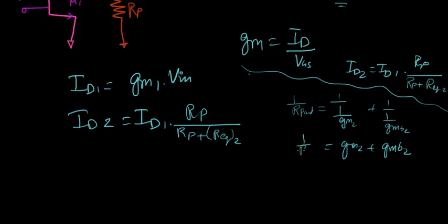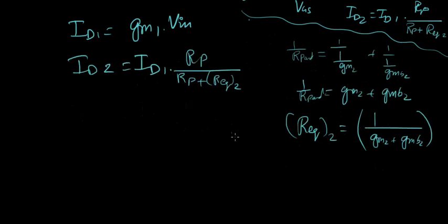So REQ2 is nothing but just one over GM2 plus GMB2. That's all it is. It's very simple. All we have to do is just substitute this value for REQ2. Let's do it then.